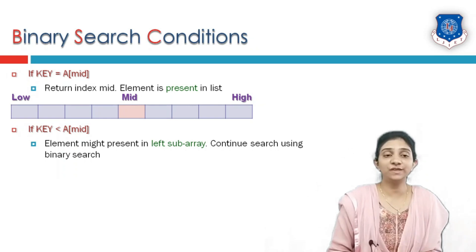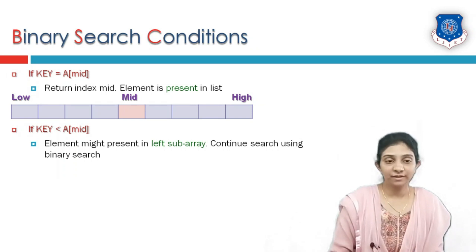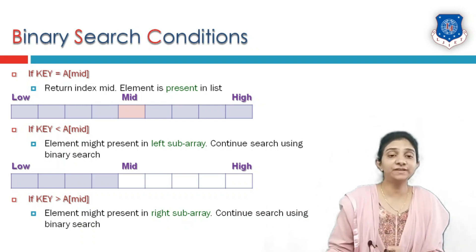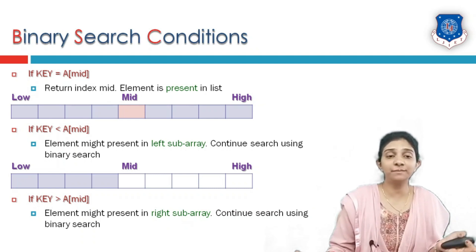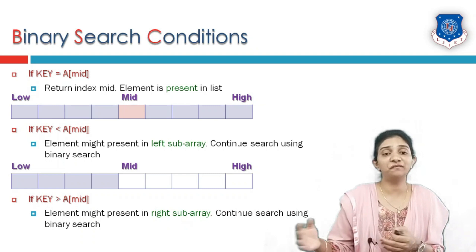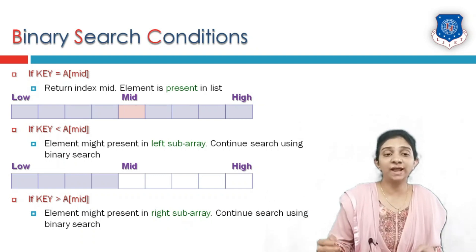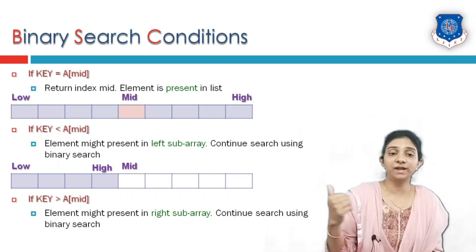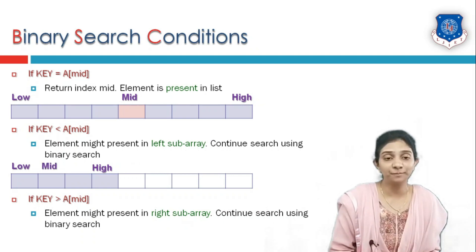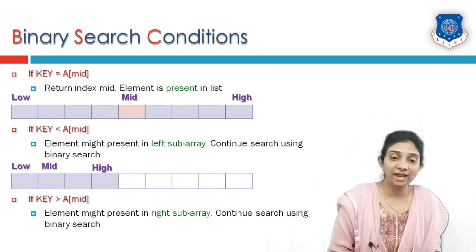The second case is that the key element is lesser than the mid element. Elements towards the left of mid are actually lesser than the mid element, so the key element might be found in the left-side sub-array. In that case, we shift our high index towards the left. The size of the array to be searched becomes smaller, and we re-initialize the mid index, continuing to compare the key element with the new mid element until the element is found.